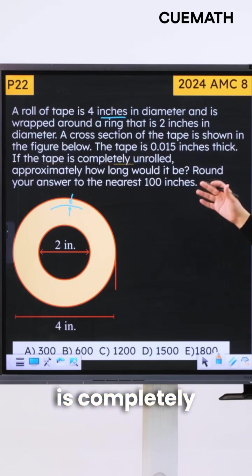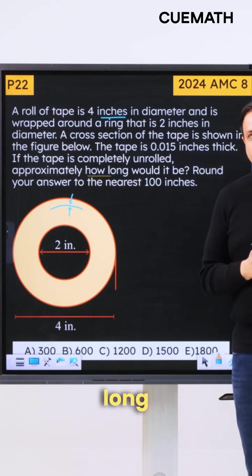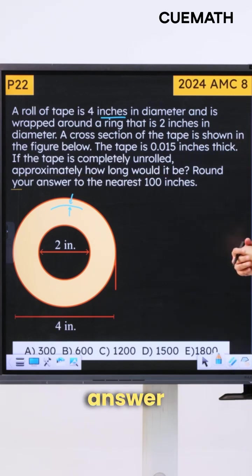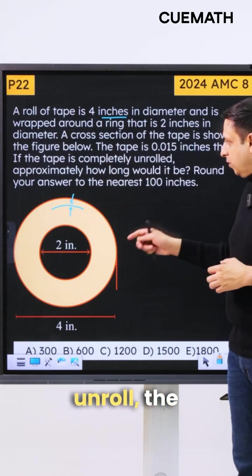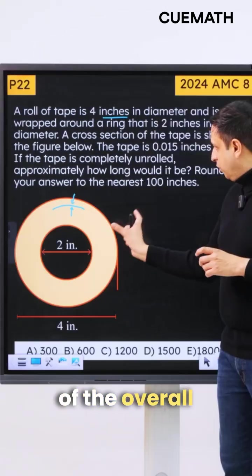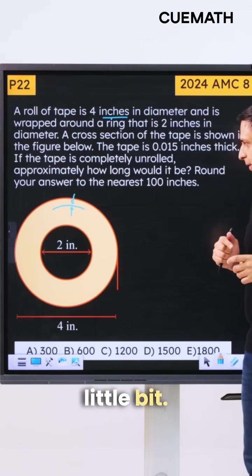If the tape is completely unrolled, approximately how long would it be? Round your answer to the nearest 100 inches. Now the complication here is that every time you do an unroll, the radius of the overall tape decreases a little bit.